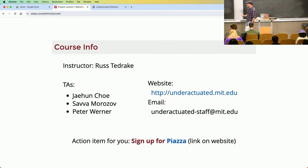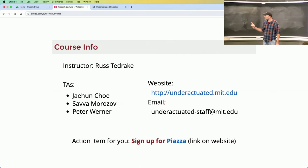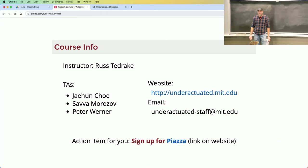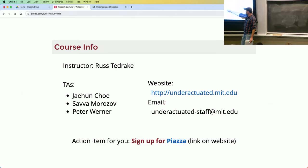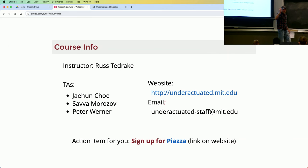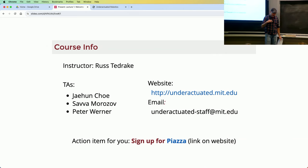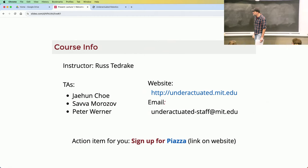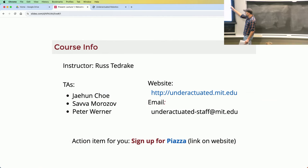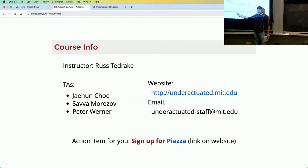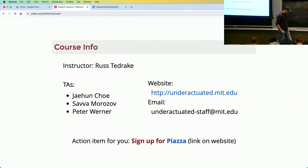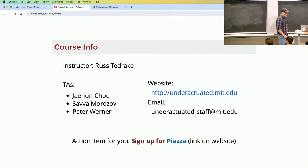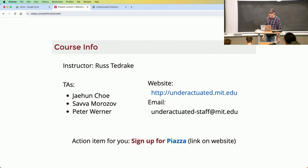Just the administrative stuff quickly. I'm Russ. Jayoon is not here today. Sava and Pete are here. Most of the information is on the website — the book is the website. From the book, you can click a link to see semester-specific information. We have our email at underactuatedstaff. If you haven't found your way to the website, please sign up for Piazza — that's the one action item. The link is on the website and on the slides. You can use slides.com to watch along too.